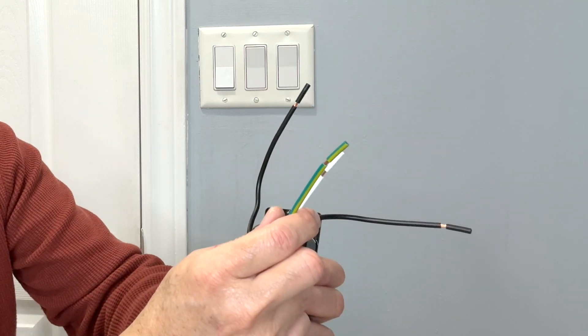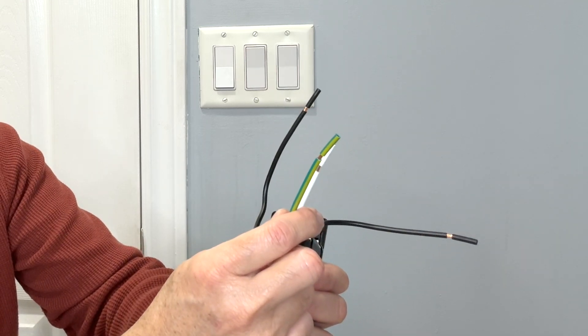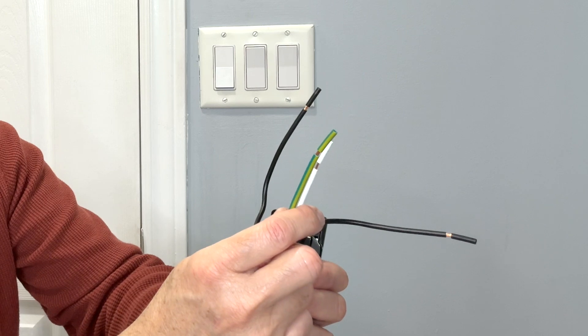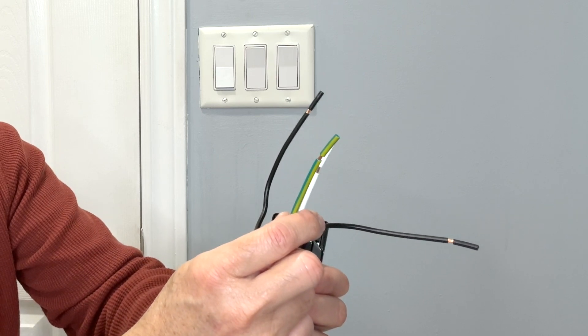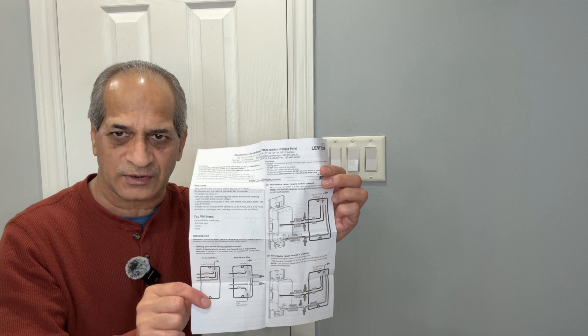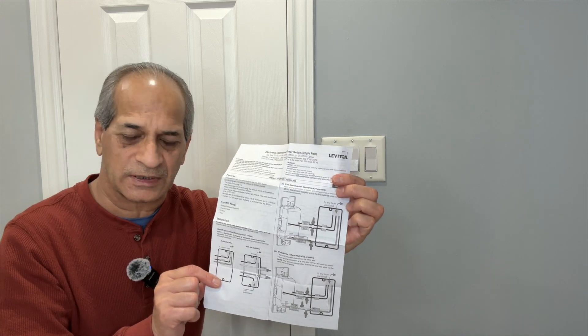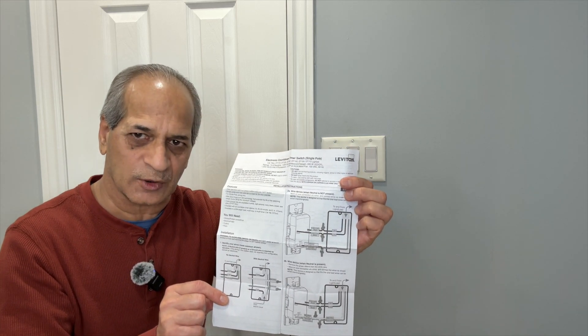If you do not have a neutral wire then leave the green sleeve on and connect it to the ground. So in those situations where we do not have the neutral wire available we connect the white neutral wire to the ground. And the switch comes with all installation instructions. It's always good to read the instructions before we start the project.